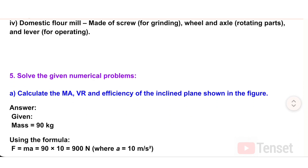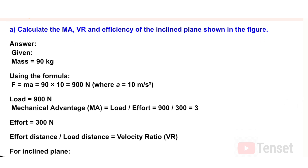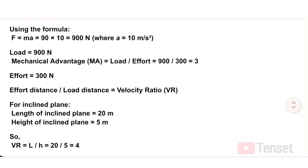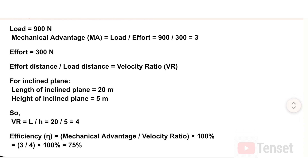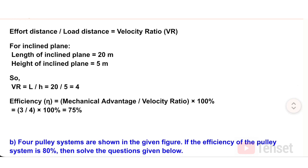Question 5: Numerical Problems. A) Calculate the MA, VR, and efficiency of an inclined plane. Given: mass = 90 kg, so Load = 90 × 10 = 900 N; Effort = 300 N; Length of inclined plane = 20 m; Height = 5 m. MA = Load / Effort = 900 / 300 = 3. VR = L / H = 20 / 5 = 4. Efficiency = (MA / VR) × 100 = (3/4) × 100 = 75%.